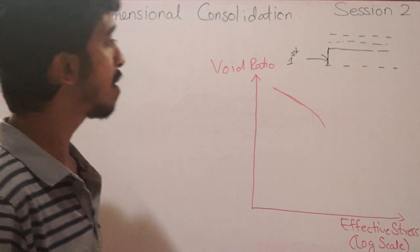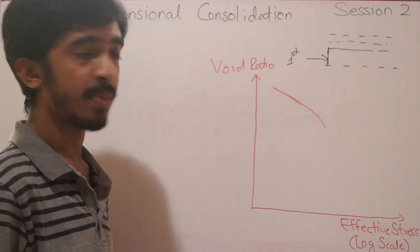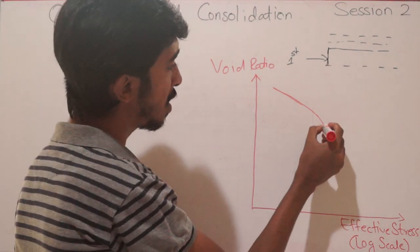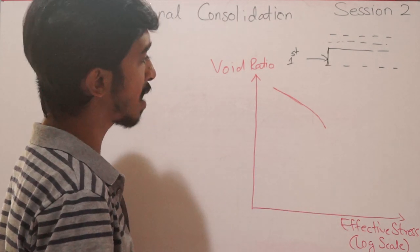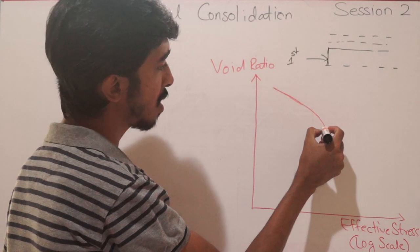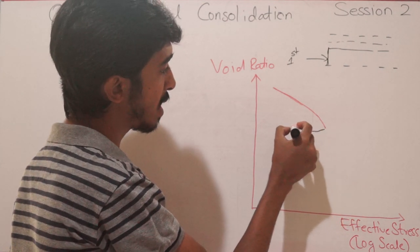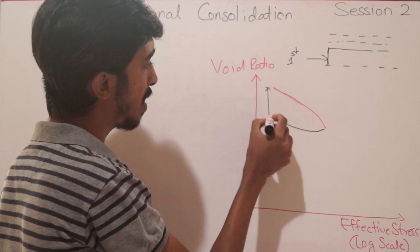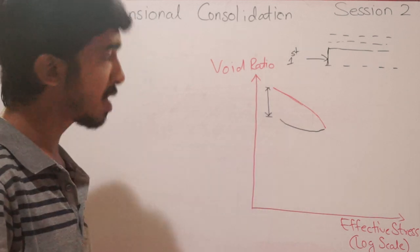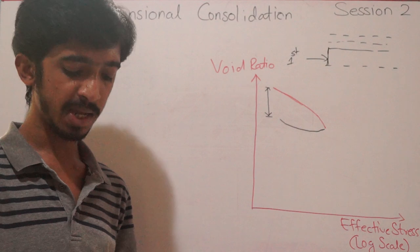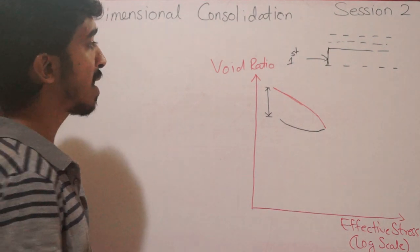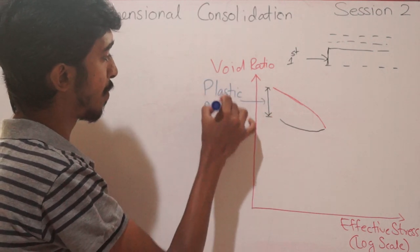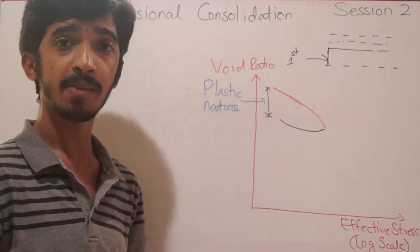At a certain moment, let's say we are excavating the soil for a one-dimensional consolidation test to perform in the laboratory. The void ratio would now start to increase and effective stress would start to decrease. There would be a variation between the initial void ratio and the void ratio after excavation, due to the plastic nature of the soil.